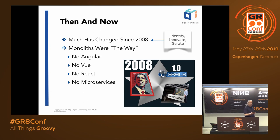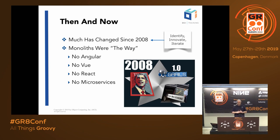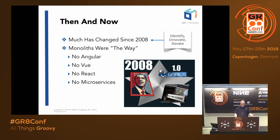Those are both examples of this identify, innovate, and iterate pattern. We identified a problem — there's got to be a better way than Struts — so we built new technology to address that challenge. Then we iterate. The same thing with GORM: we identified the opportunity to make Hibernate easier to use and add capabilities, then created new technology to address that. Identifying a gap, addressing it with innovation, and then rinse and repeat — that's what we've been doing for a long time.